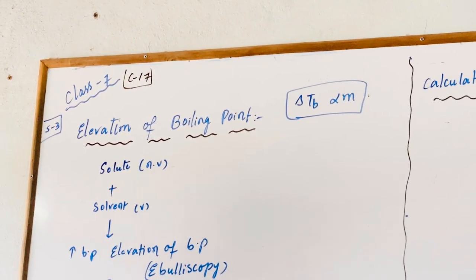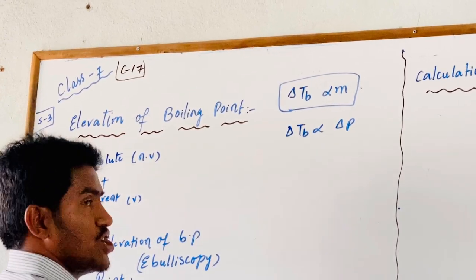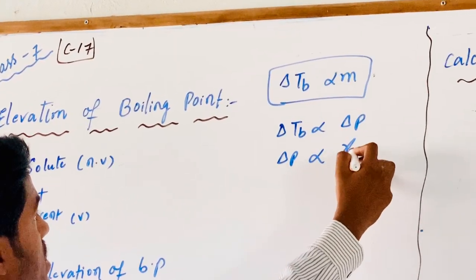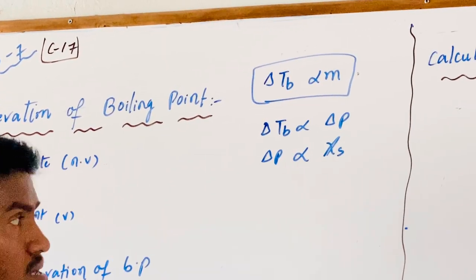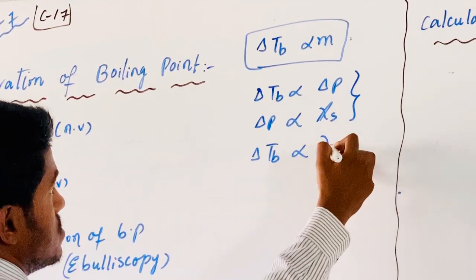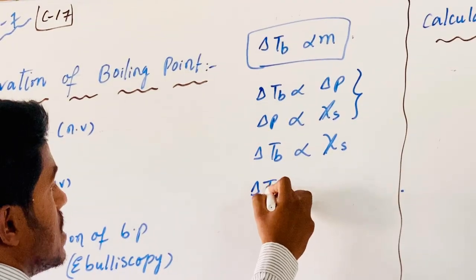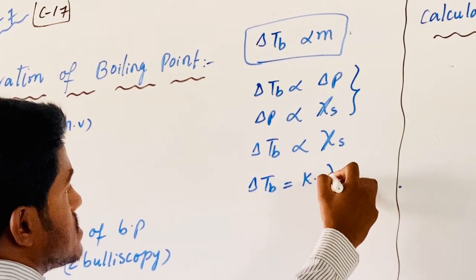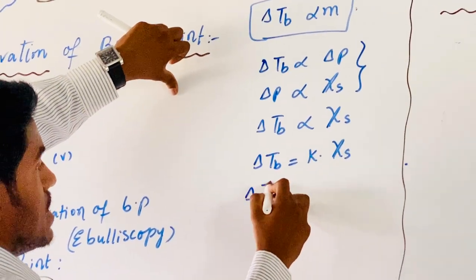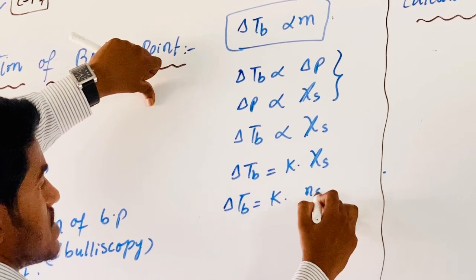It can be proved that delta Tb is directly proportional to delta P (change in pressure). Delta P is directly proportional to chi-s, the mole fraction of solute. Combining these two, delta Tb is directly proportional to chi-s. Eliminating proportionality, delta Tb equals K into chi-s, where chi-s is the mole fraction of solute.